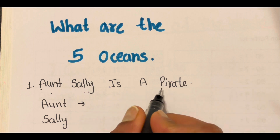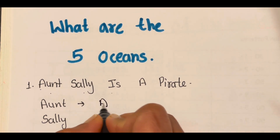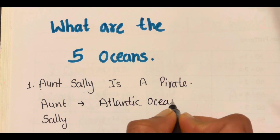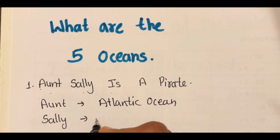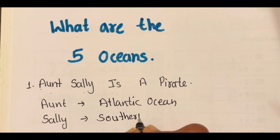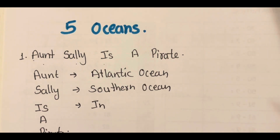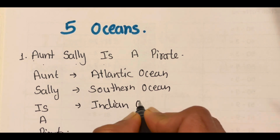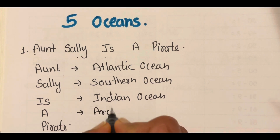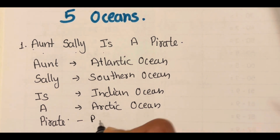Aunt Sally is a pirate. Aunt is Atlantic Ocean. Sally is Southern Ocean. Is — Indian Ocean. A — Arctic Ocean. And P is Pacific Ocean.